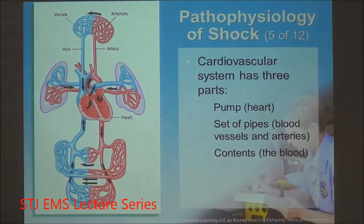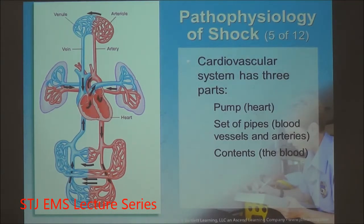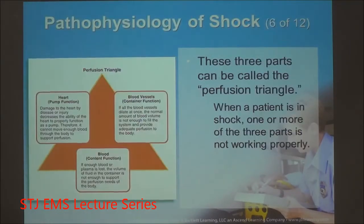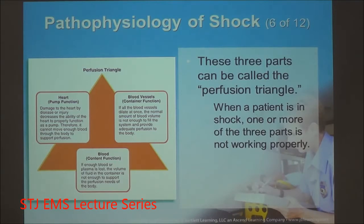For continual pressure to exist, the circulatory system must have all three of its structures functioning: a good pump, a good set of pipes, and enough fluid content. Lack of any one of these leads to the pathophysiology of shock. This is the perfusion triangle. Let's look at blood vessel container functionality first.